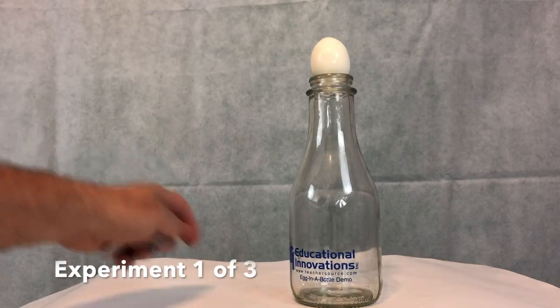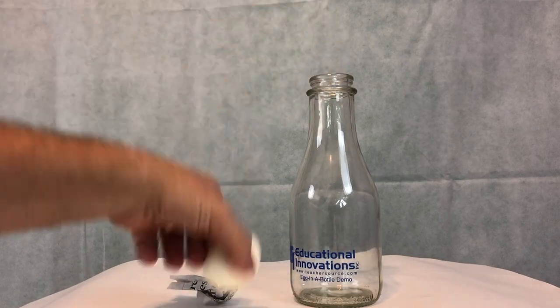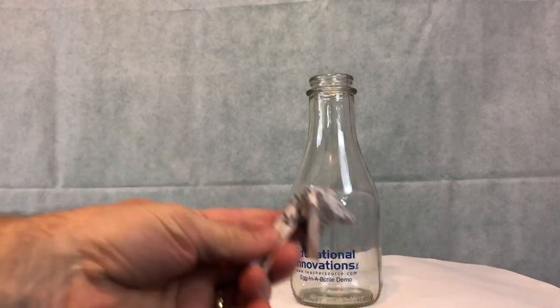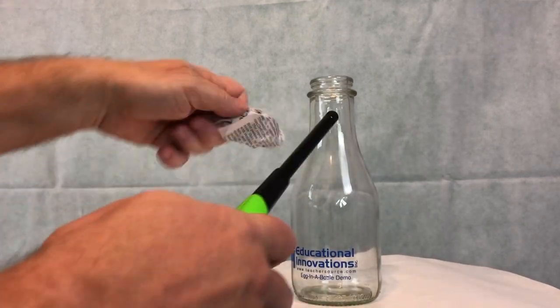Alright, so here's the first of three experiments. You can see a hard-boiled egg will not go into a standard milk bottle. It just will not fit. So what you do is you take a piece of newspaper and you light it on fire with adult supervision.